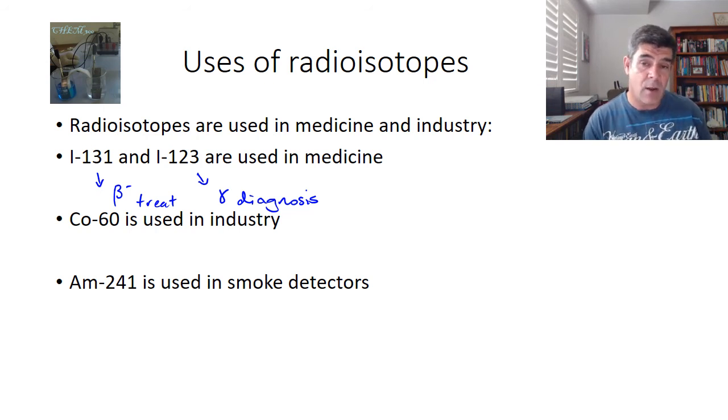A couple of videos ago, I talked about those two very important properties of ionization and penetration. Ionization is very important if we want to destroy cells, but penetration is more important if we're trying to use a machine to detect abnormal growths and those sorts of things.